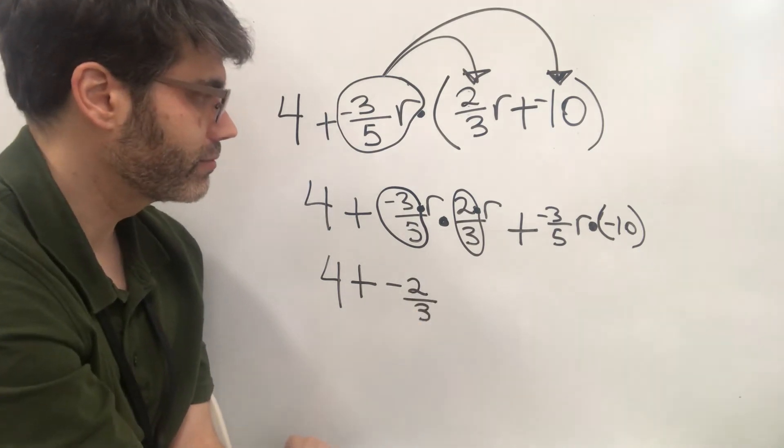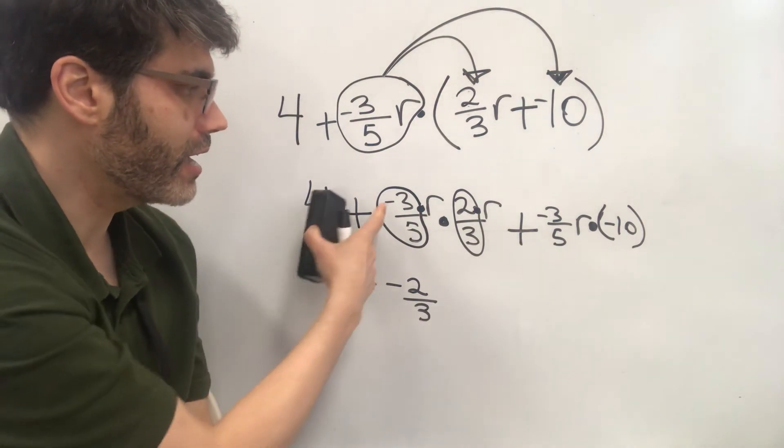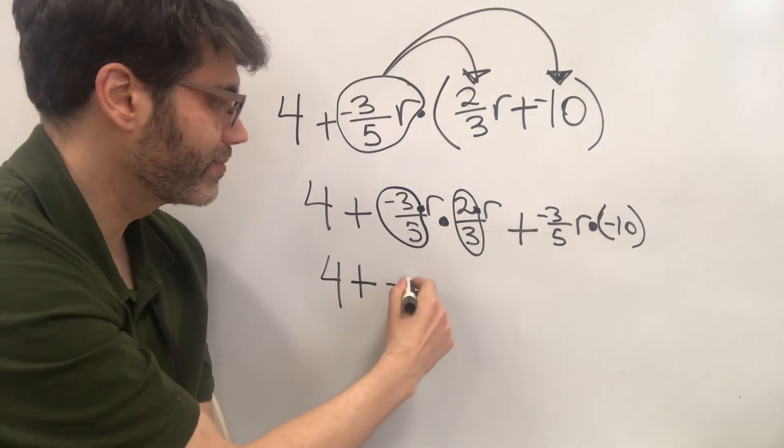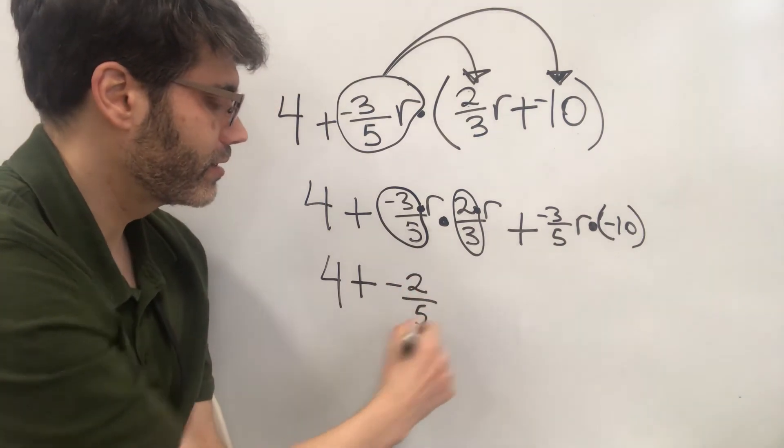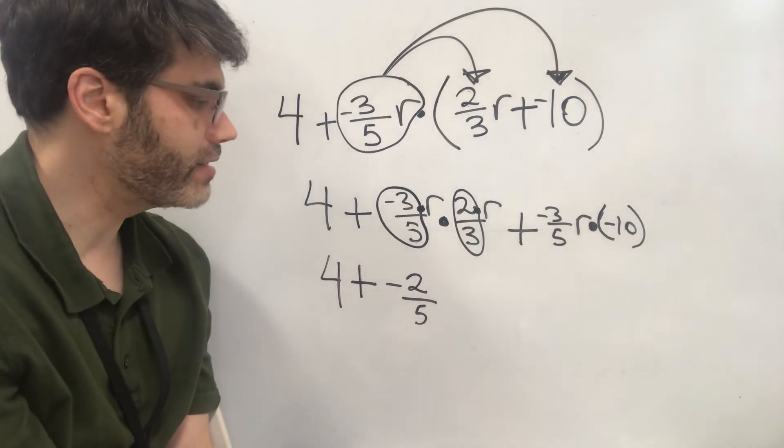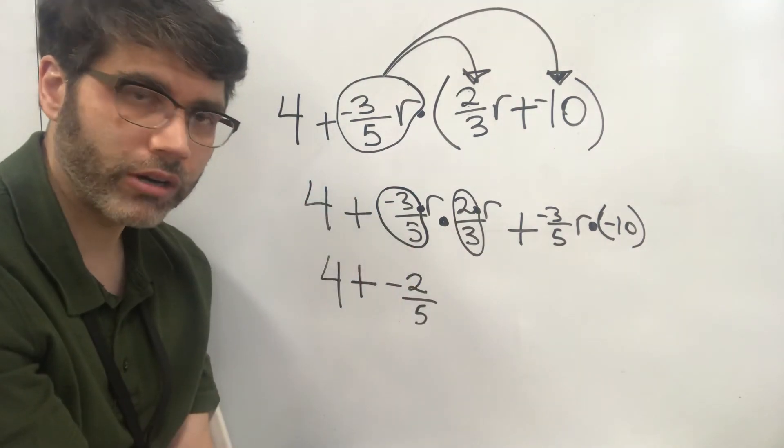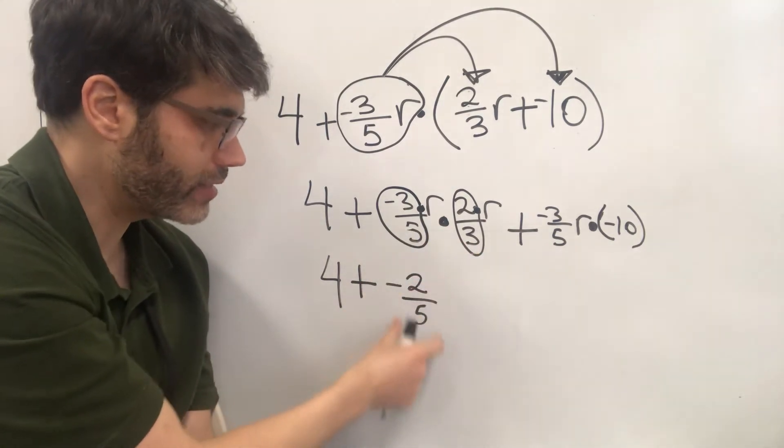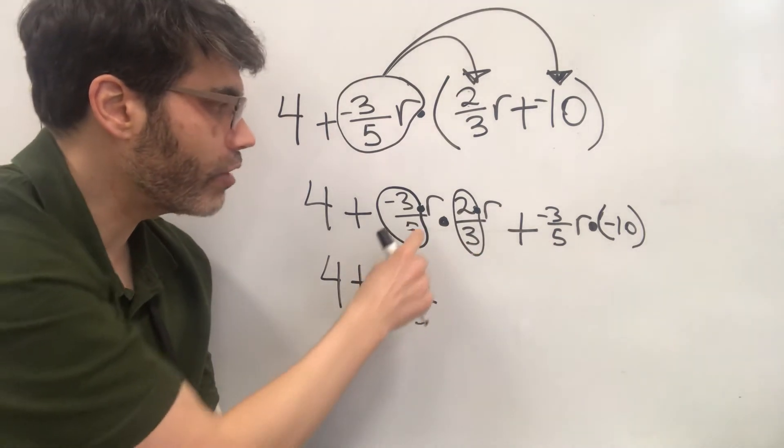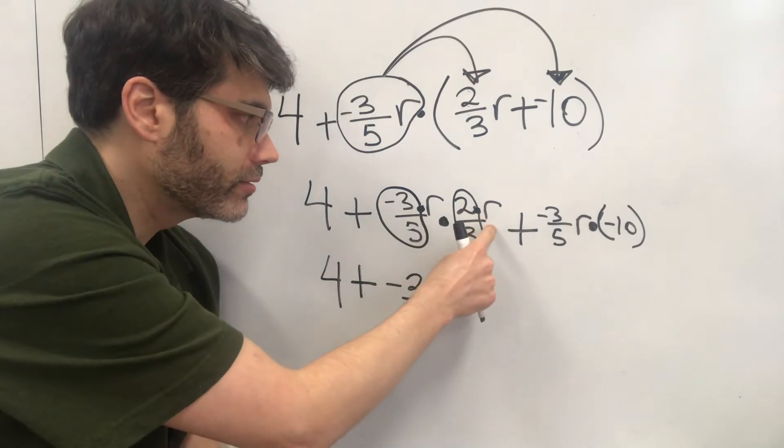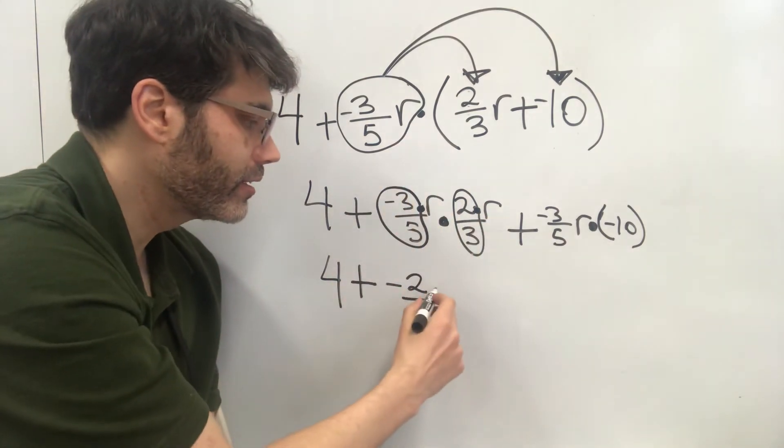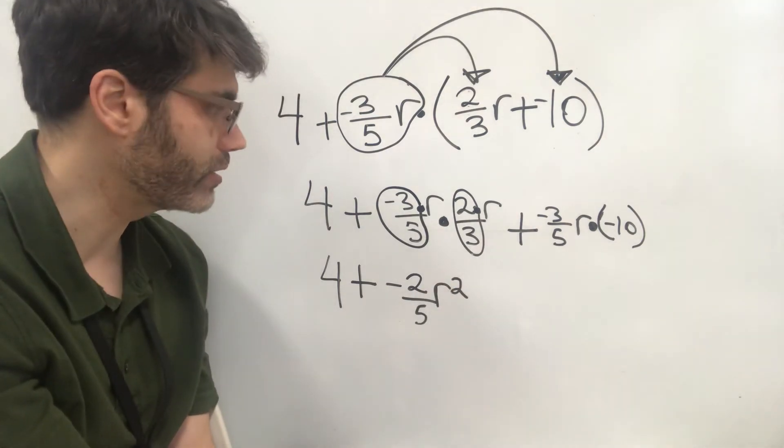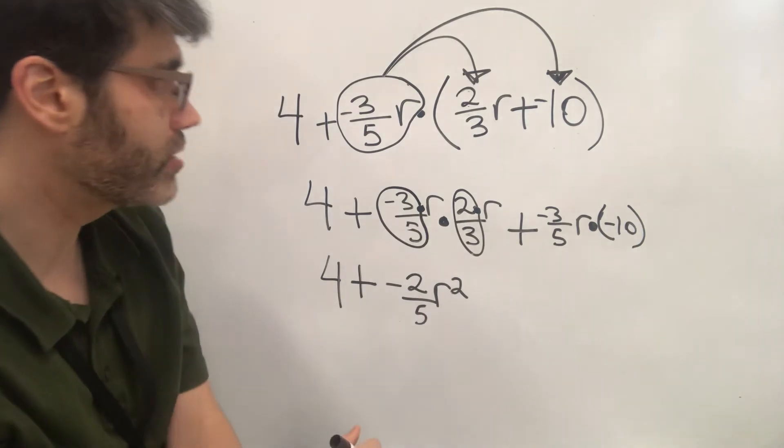So that would be negative two-thirds. No. That does not make sense. Six-fifteenths. Two-fifths. I'm sorry. Negative two-fifths. And then, now we take care of the r's. So we multiply the two fractions together. We boil it down to negative two-fifths. Now, r times r. r times r is r squared. So that's really important to see. So you can multiply those terms together.